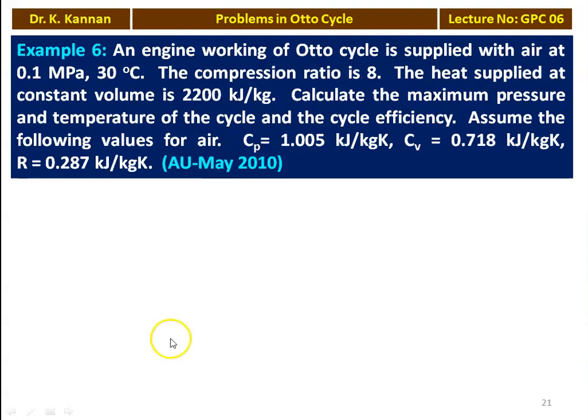Example number 6 from the May 2010 question paper. An engine working on an Otto cycle is supplied with air at 0.1 MPa and 30°C. The compression ratio is 8. The heat supplied at constant volume is 2200 kJ/kg. Calculate the maximum pressure and temperature of the cycle and the cycle efficiency. Assume Cp equals 1.005 kJ/kg·K, Cv equals 0.718 kJ/kg·K, and R equals 0.287 kJ/kg·K.